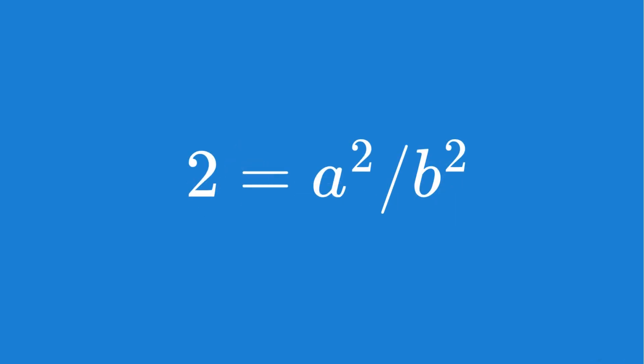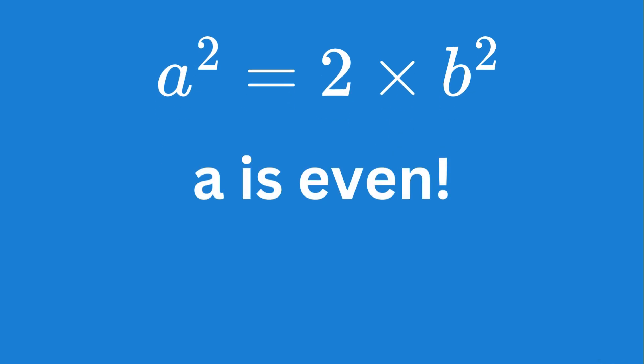If we square both sides and separate the letters, we can see that a squared is divisible by 2, and therefore a must be even, since if a is odd, then a squared is odd.